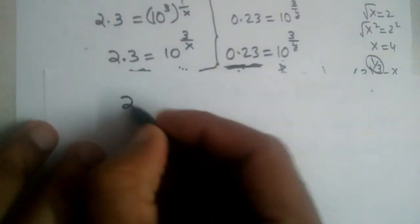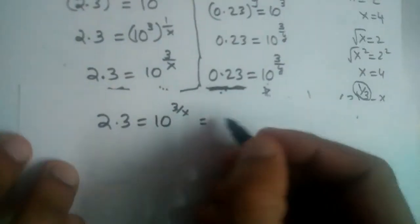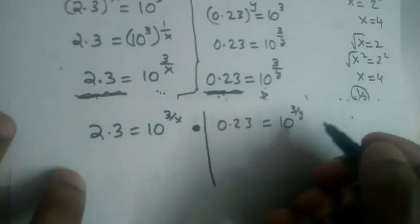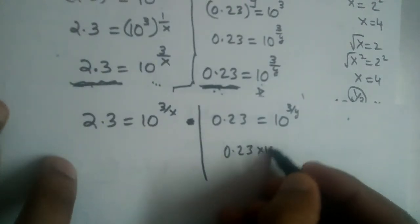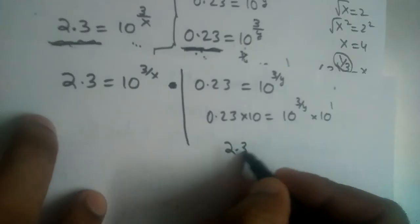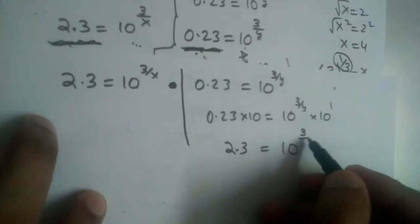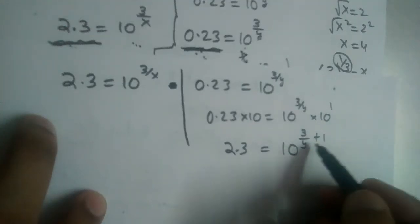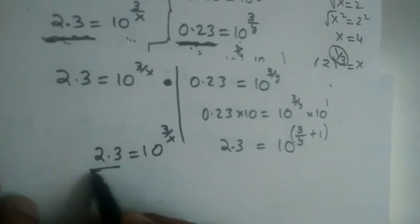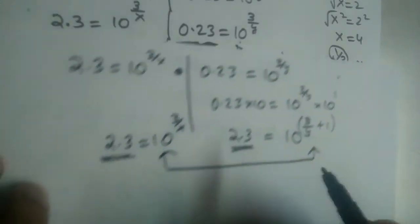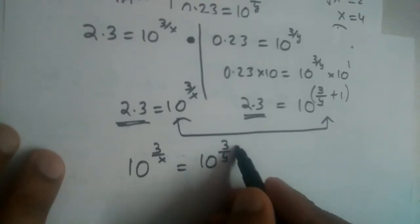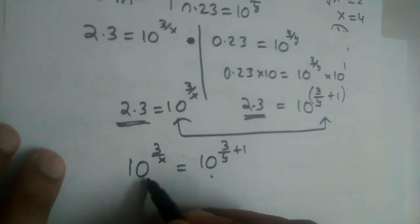After multiplying, we have 2.3 equals 10 power 3/x from the first equation, and 2.3 equals 10 power (3/y plus 1) from the second — since 10 power 3/y times 10 power 1 combines as 3/y plus 1. Since both equal 2.3, we equate: 10 power 3/x equals 10 power (3/y + 1).